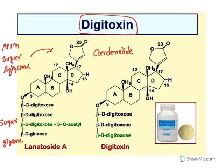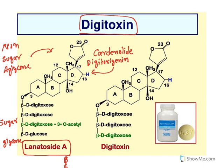From Digitalis lanata you get lanatoside A. There are three different glycosides: lanatoside A, B, and C. Lanatoside A contains a cardenolide called digitoxygenin. 'Genin' indicates the non-sugar aglycon part. The remaining part is the sugar molecule. In that sugar portion there are four sugar units: digitoxose, digitoxose, digitoxose, 3-acetyl digitoxose, and glucose. This is what lanatoside A is.